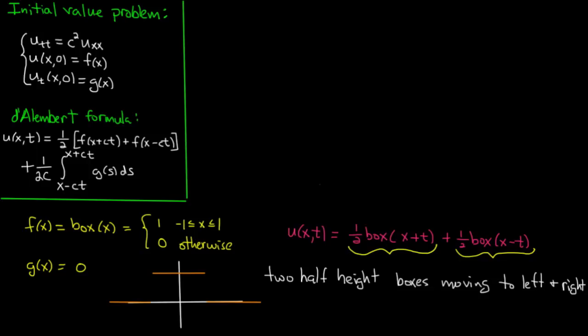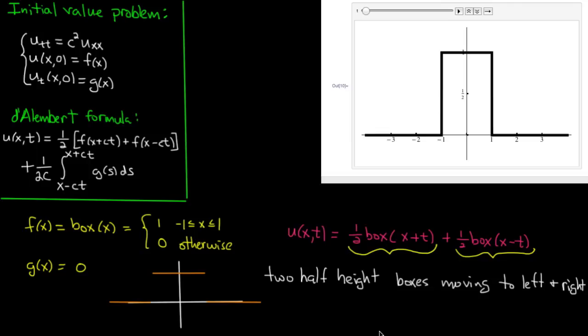Alright, I made an animation in Mathematica, let's take a look. So what we're looking at here is the graph of u at the initial time, t equals 0, which is the same as the picture that I drew down here. And as I play the animation you'll see the two half-height boxes move away from each other at the speed c equals 1. So at the initial time you see that the two half-heights add together to be a total height of 1, but then they start moving apart.